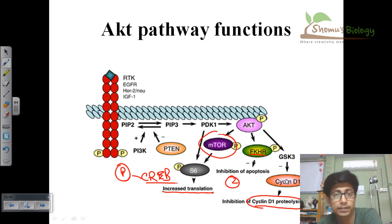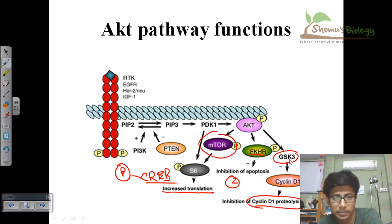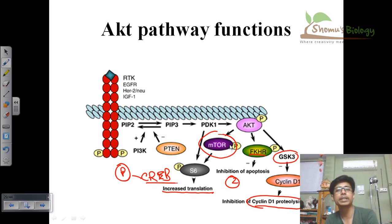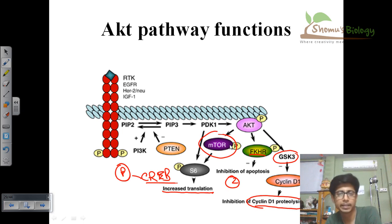Inhibition of cyclin D1 proteolysis is achieved by down-regulating GSK3. Overall, the AKT pathway connects the PI3 kinase pathway with the mTOR pathway, completing the triad of PI3K, AKT, and mTOR — which together tell the cell to live for a long time and prevent apoptosis.